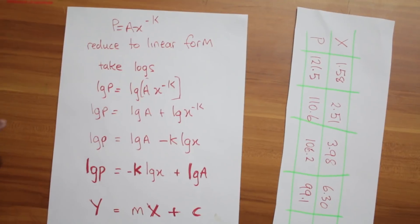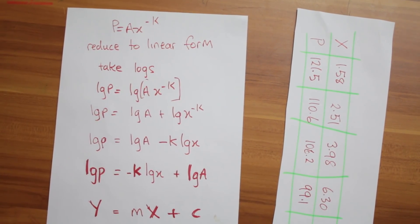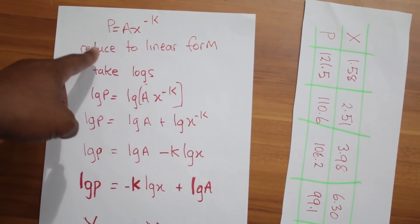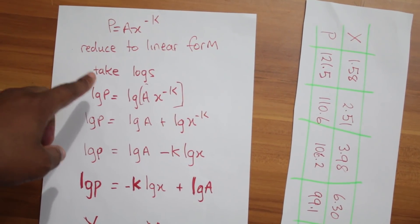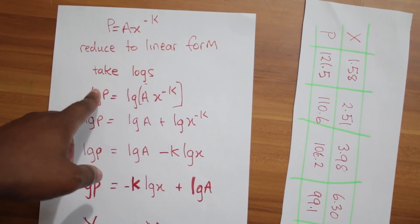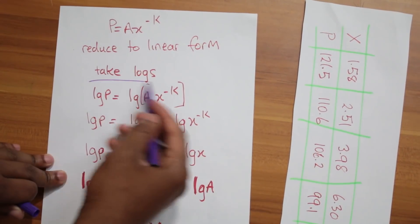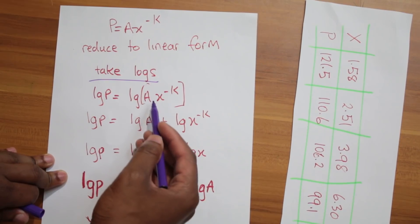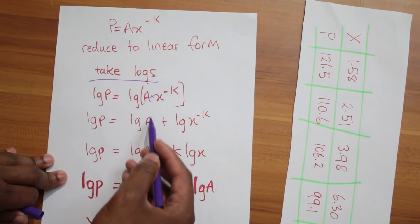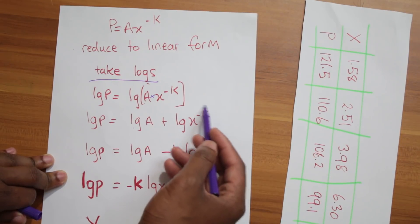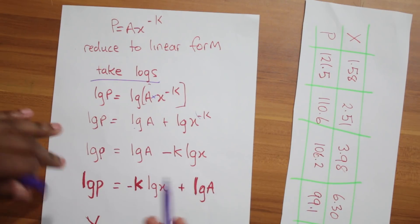One of the main problems is people don't understand what logs is really about, which is why it all seems so abstract. Anyway — take logs of both sides. You see how we do it again: drop logs onto the equation. Taking logs of both sides, we have a multiplication taking place, so we split them up using the log rule. This is now log of a plus log of x to the negative k.